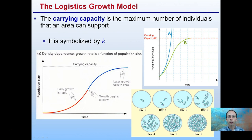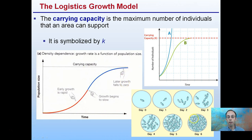There's something called carrying capacity — the maximum number of individuals that an area can support, symbolized by K. Early growth is rapid and almost exponential, then growth begins to slow, and later growth falls to zero. That doesn't mean zero individuals — the growth rate reaches the carrying capacity, the maximal number of individuals a region can support. Exponential curves don't really occur in nature; we have this more logistic curve — exponential for a short period and leveling off as organisms approach their carrying capacity.